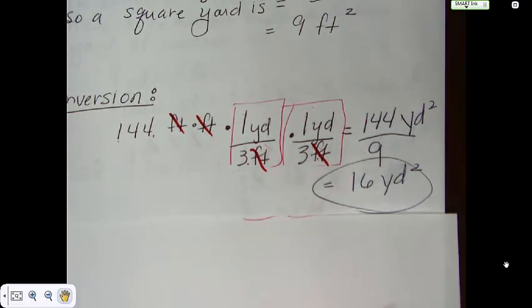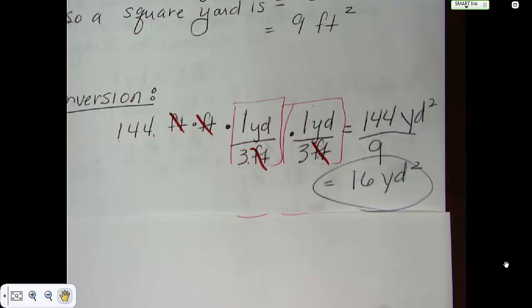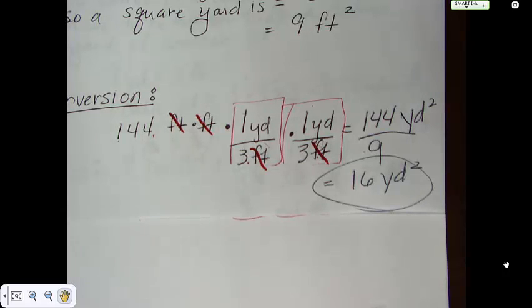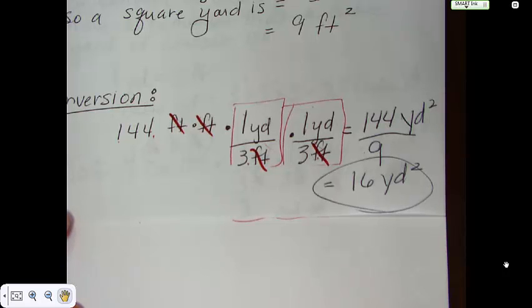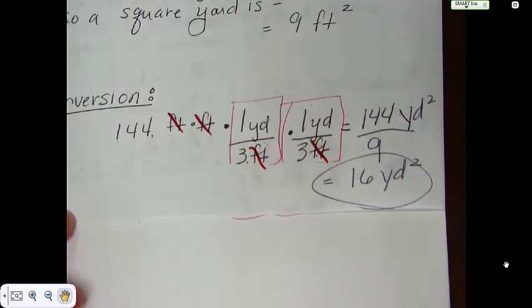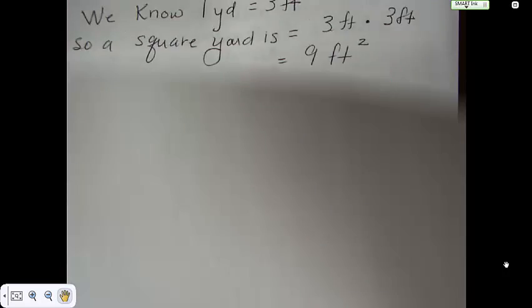That's 16 square yards. So if you were to buy carpet and that carpet was $10 a square yard, it would be 16 times 10, which would be $160 for carpet. That's a very common use for that particular conversion.